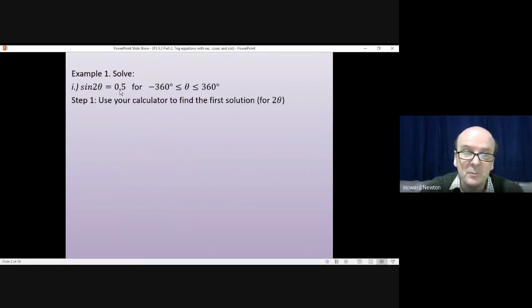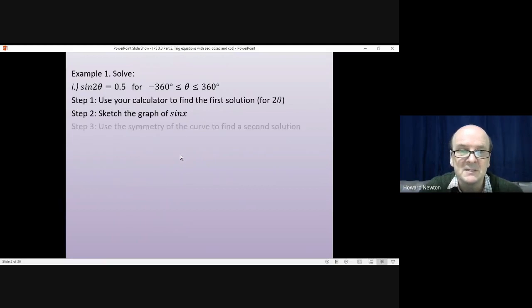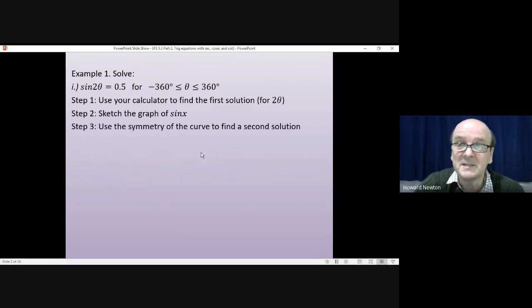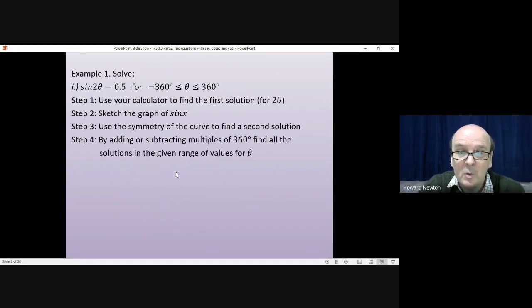The first step is just using your calculator to find the first solution. So you do inverse sine of 0.5, that gives you the first solution. Second step is drawing a very quick sketch of the relevant graph, sine, cos or tan. In this case we'll be drawing a sketch of sine x. Step 3 is using the symmetry of the curve to find a second solution to the equation. Step 4 will then add or subtract multiples of 360 degrees to find all the solutions in the given range of values for theta. For us that's from minus 360 up to plus 360.